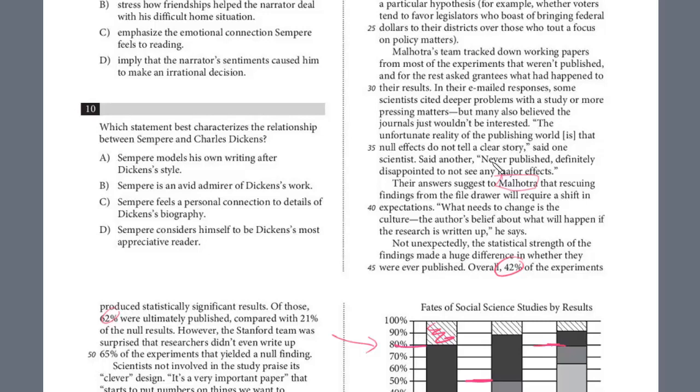The unfortunate reality of publishing world is that null effects do not tell a clear story. Again, that doesn't really relate. The graph just says they weren't published. It has nothing to do with published, in specifically that relates to the graph. Let's look at 43 to 45. Not unexpectedly, the statistical strength. Remember, we already defined strength as really the significance of the findings made a huge difference of whether they were ever published.